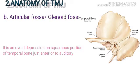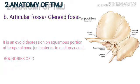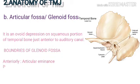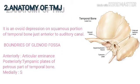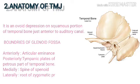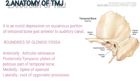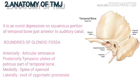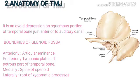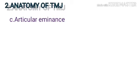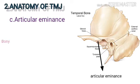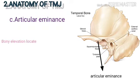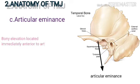The articular fossa, or glenoid fossa, is an ovoid depression on the squamous portion of the temporal bone, just anterior to the auditory canal. Its boundaries: anteriorly — the articular eminence; posteriorly — the tympanic plate of the petrous part of the temporal bone; medially — the spine of the sphenoid; and laterally — the root of the zygomatic process.